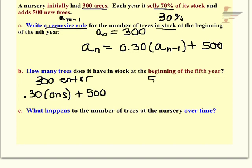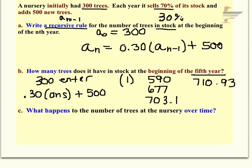And press enter. And your first value should be 590. That's my first year. We want to go through the beginning of the fifth year. So I press enter again, and I get 677. I press enter again, I get 703.1. And I know I can't have part of a tree, but I guess I'll make sense of that later. Press enter again. So my fourth time is 710.93. And finally, my fifth is 713.279. So I'll just say 713 trees at the beginning of my fifth year.